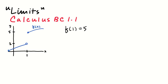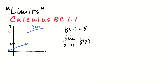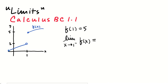Now, suppose I ask you what is happening to the function as x gets closer to 1, approaching from the left. The notation we're going to use is x approaching 1 from the left — we'll say from the negative side, like as if the negative is an exponent. We're considering the one-sided limit. As we're approaching 1 from the left, we're getting closer and closer to y equals 2. So the limit as x approaches 1 from the negative side of f of x is equal to 2.